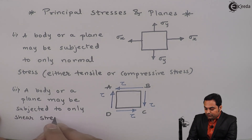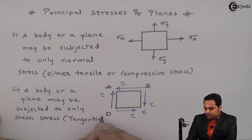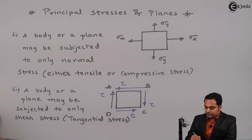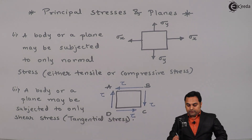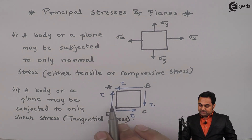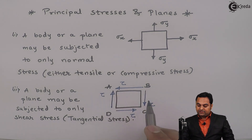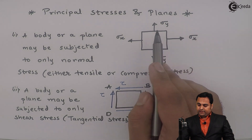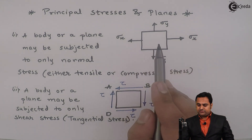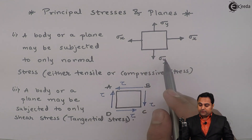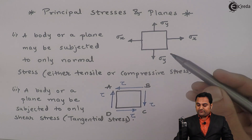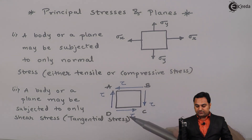The other word for shear stress is tangential stress. In this example, the body is acted upon only by shear stress, whereas previously it was subjected to only normal stress. So here we have seen what is meant by normal stress and shear stress.